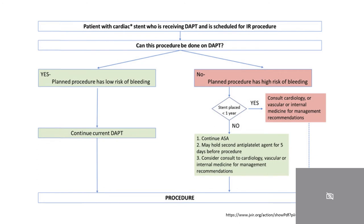A similar flowchart can be applied to patients with cardiac stents on dual antiplatelet therapy. If the planned procedure has a low risk of bleeding, the patient can continue dual antiplatelet therapy. However, if the planned procedure has a high risk of bleeding, you need to consider the age of the stent. If the stent was placed less than one year prior, cardiology, internal medicine, or vascular surgery should be consulted for management recommendations. If the stent was placed more than one year ago, aspirin can usually be continued but the second antiplatelet agent can be held, usually five days prior to the procedure.